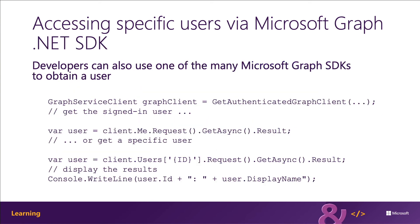Developers can also use one of the many Microsoft Graph SDKs to obtain a user. For example, to get a user with the Microsoft Graph .NET SDK, you first get an authenticated Graph client for Microsoft Graph, and then use the .Me.Request().GetAsync() method to get the current user. Or to get a specific user, you would use .Users["{id}"] and make the same call.